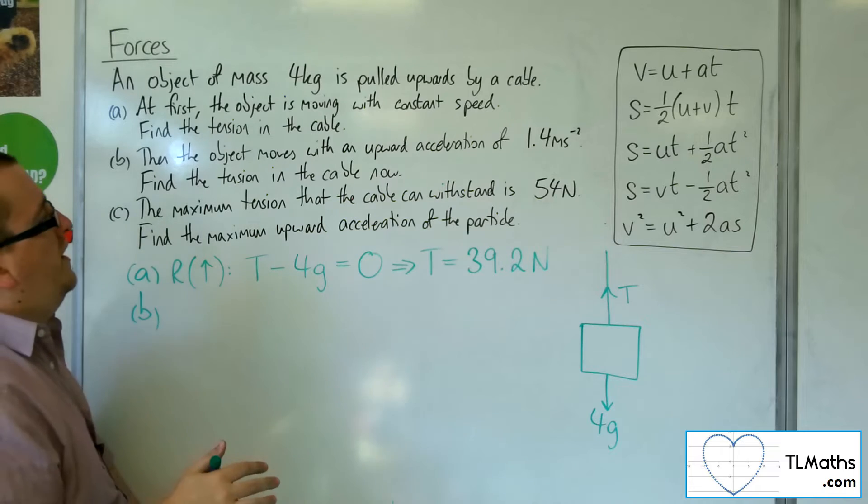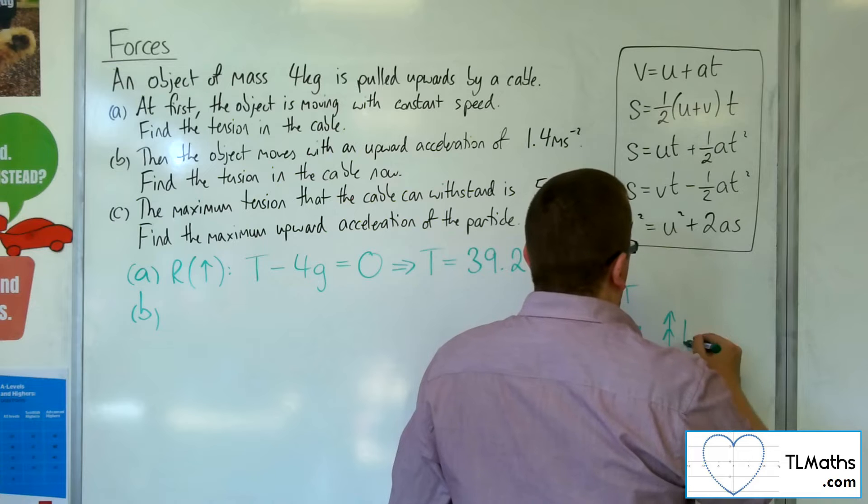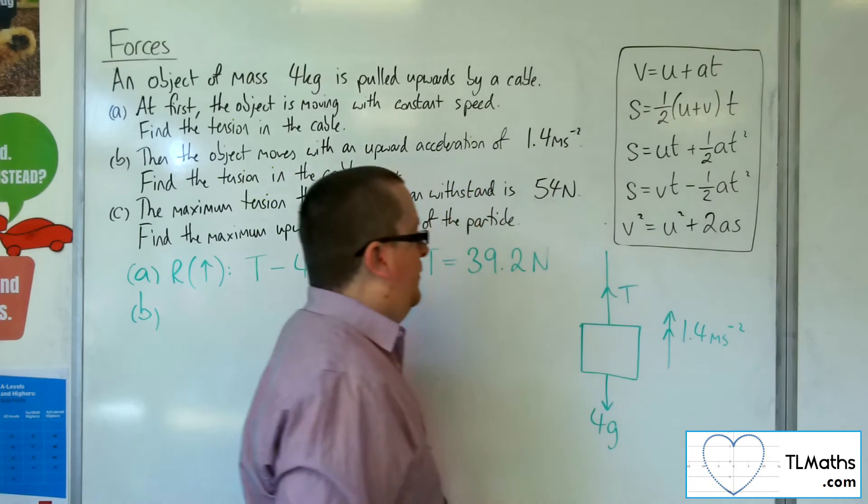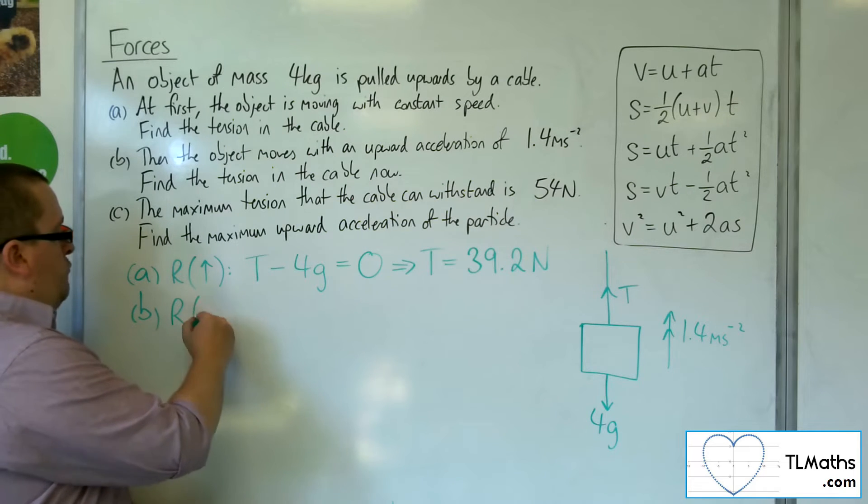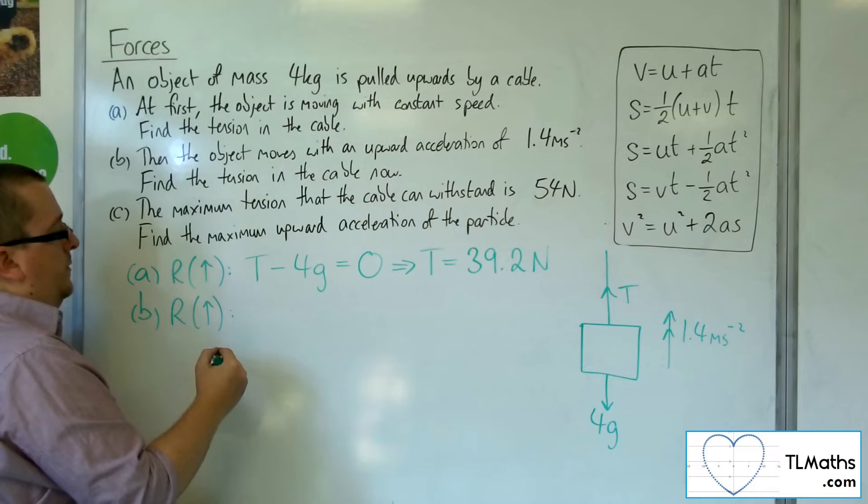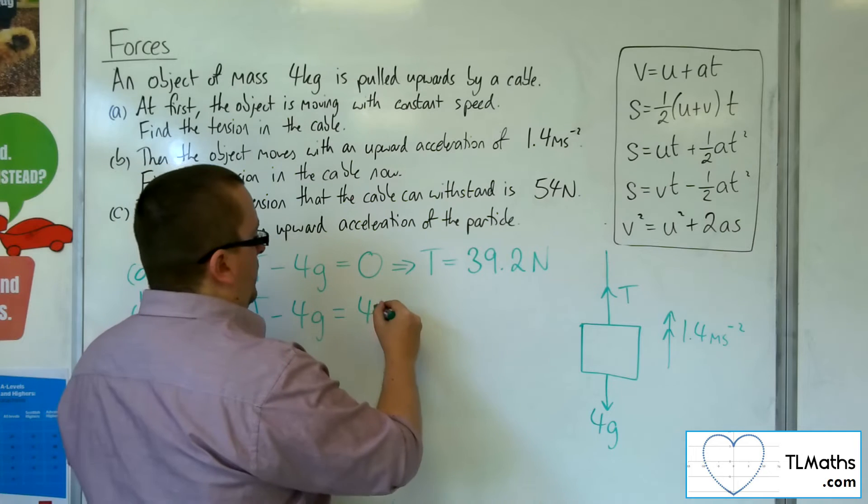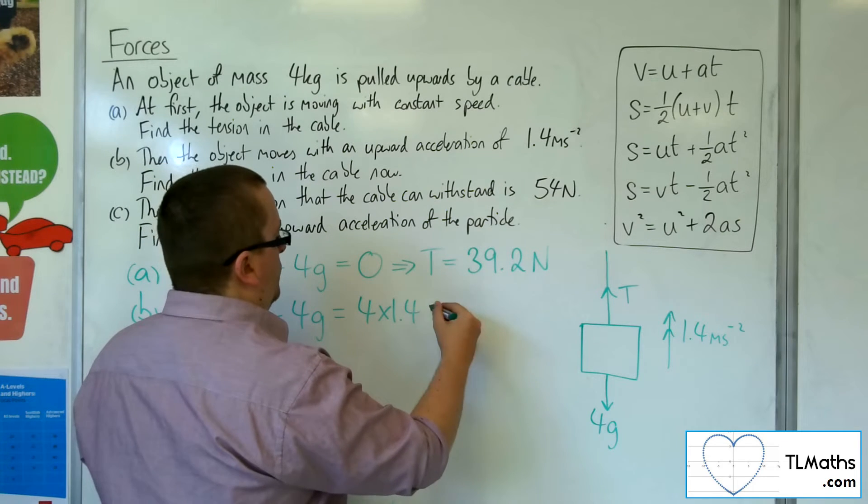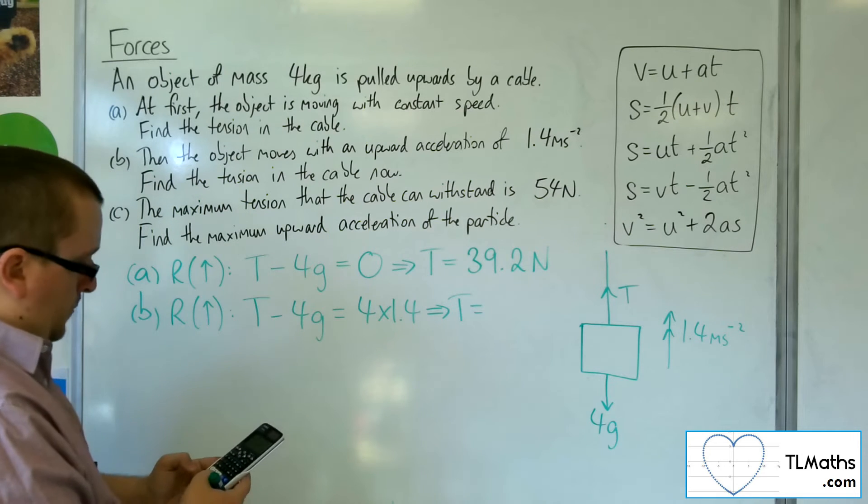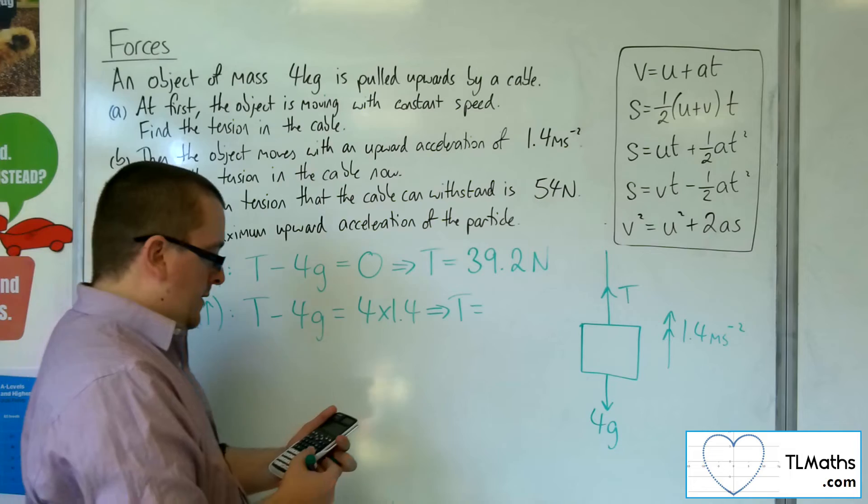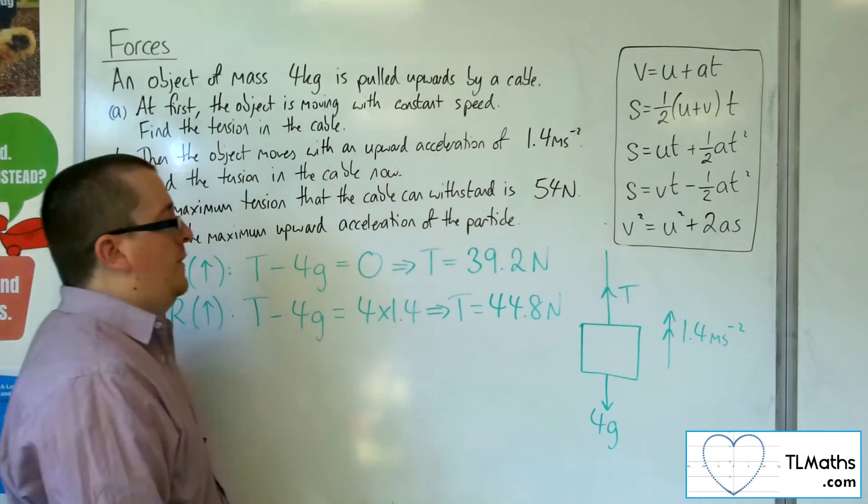Then the object moves with an upward acceleration of 1.4 metres per second per second. Find the tension in the cable now. So if I resolve upwards, T take away 4g is equal to mass, which is 4, times acceleration, 1.4. So 4 lots of 1.4 plus 4 lots of 9.8 gets me to 44.8 newtons. So that's the tension on the cable.